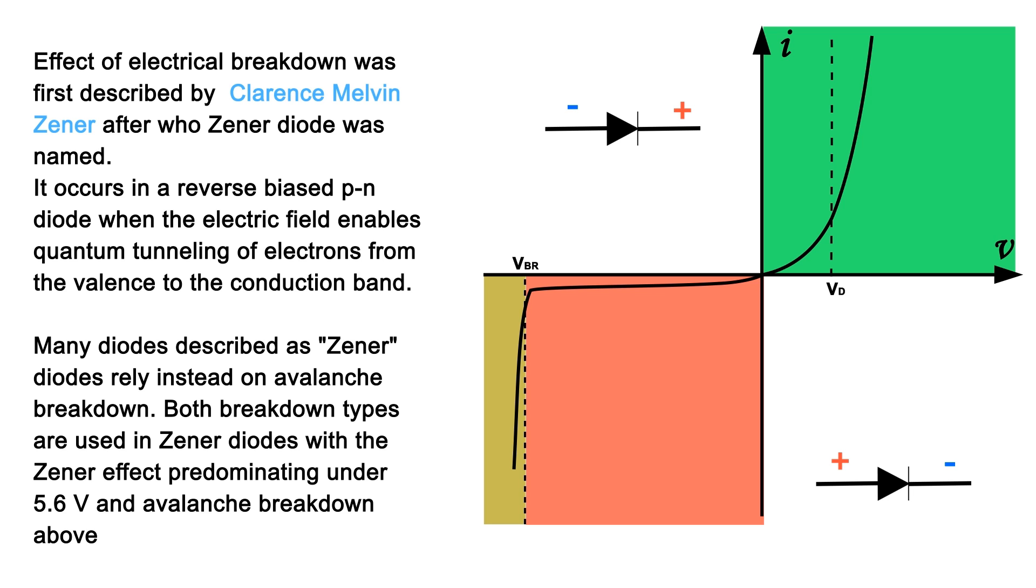Many diodes described as Zener diodes rely instead on avalanche breakdown. Both breakdown types are used in Zener diodes, with the Zener effect predominating under 5.6 volts and avalanche breakdown above.